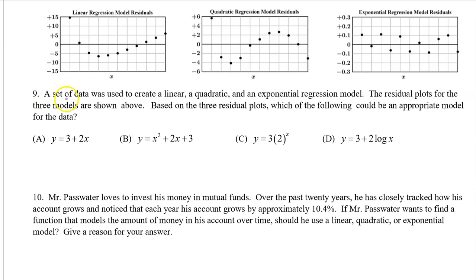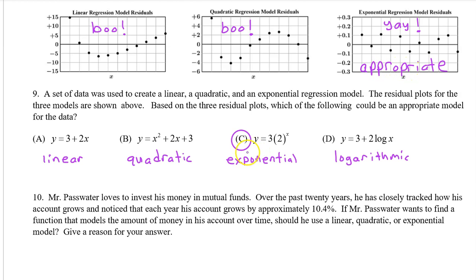Number 9. A set of data was used to create a linear, quadratic, and an exponential regression model. The residual plots for the three models are shown above. Based on the three residual plots, which of the following could be an appropriate model for the data? The lack of a pattern in the exponential regression model residuals means that the exponential model is the one that is appropriate. So the answer is C because that is the exponential model.